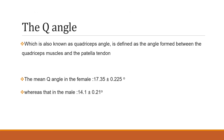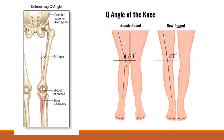The next topic is the Q angle, also known as the quadriceps angle. It is defined as the angle formed between the quadriceps muscle and the patellar tendon. The mean Q angle for females is 17 degrees and for males is 14 degrees. It is measured by drawing a line from the anterior superior iliac spine to the midpoint of the patella, and a second line from the midpoint of the patella to the tibial tuberosity.